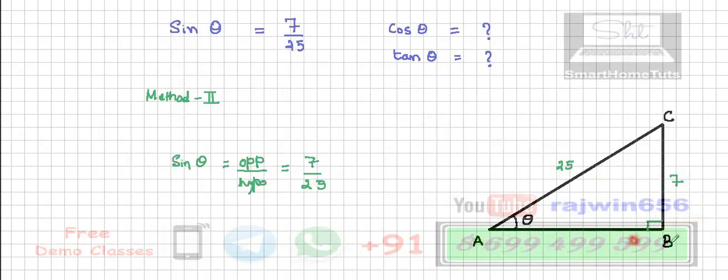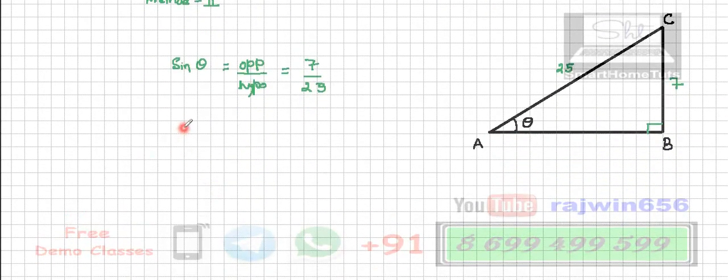So I can use Pythagoras theorem and I can find the value of AB. So we will use here by Pythagoras theorem: hypotenuse square, that is AC square, is equal to AB square plus BC square.